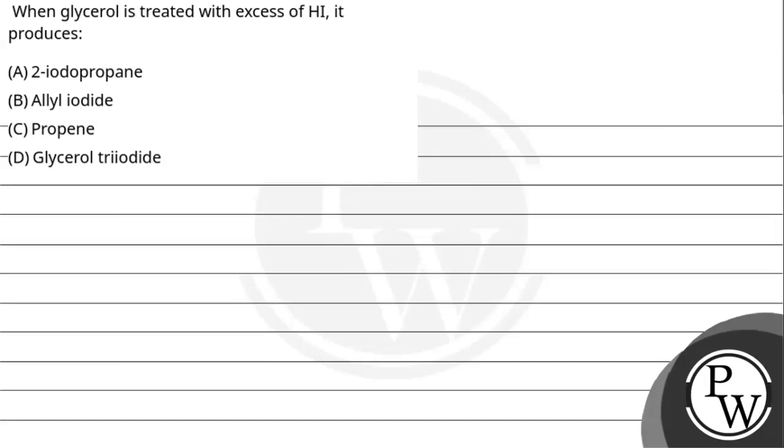Hello, let's read this question. When glycerol is treated with excess of HI, it produces option A, 2-iodopropane, option B, allyl iodide, option C, propane, option D, glycerol triiodide.